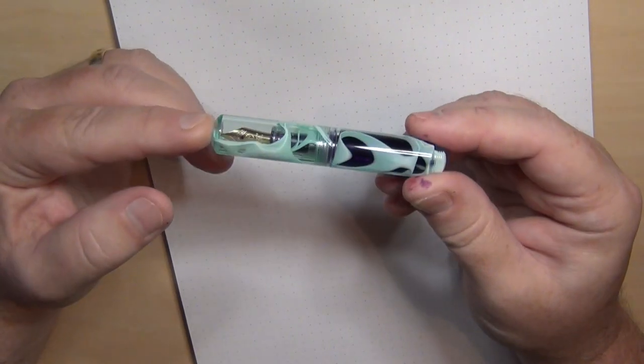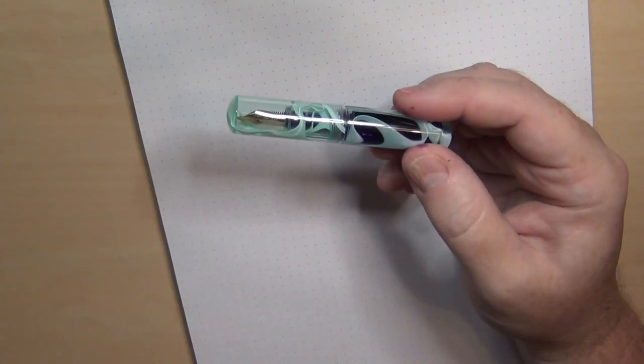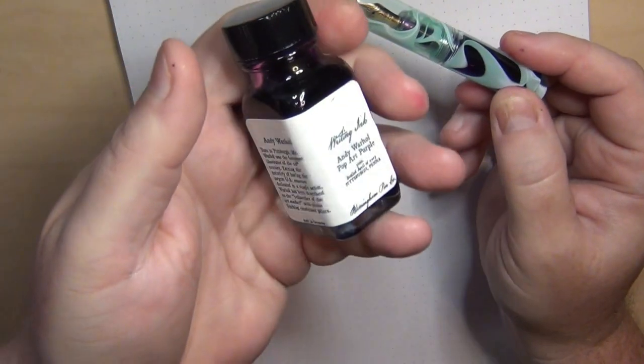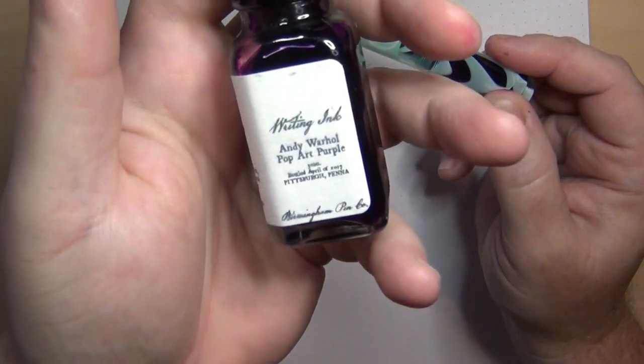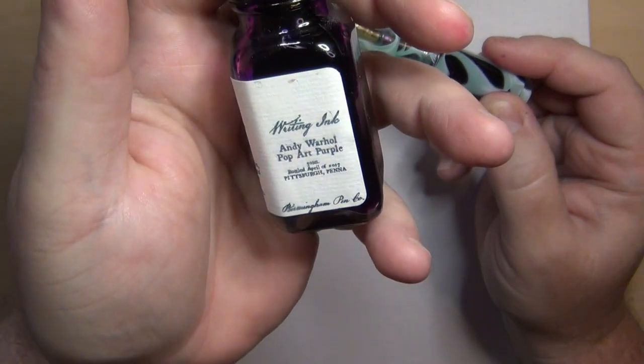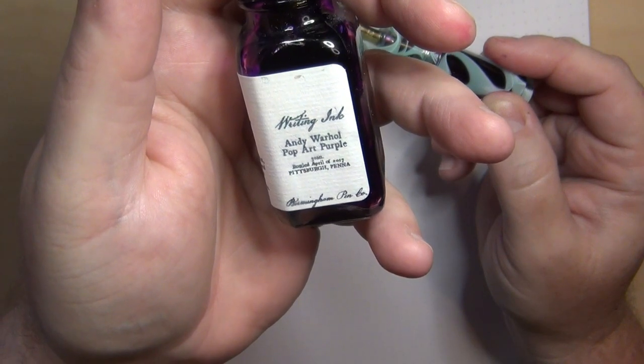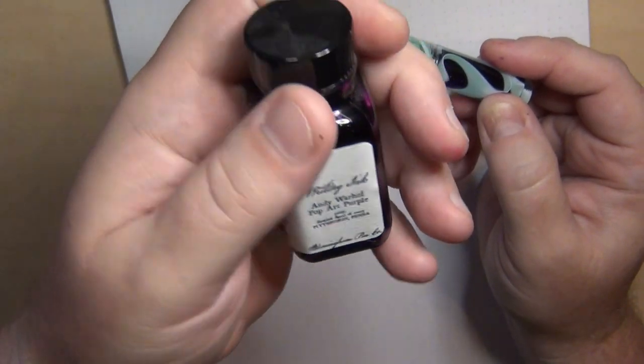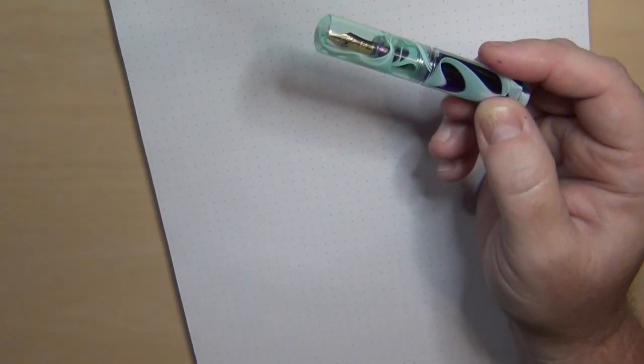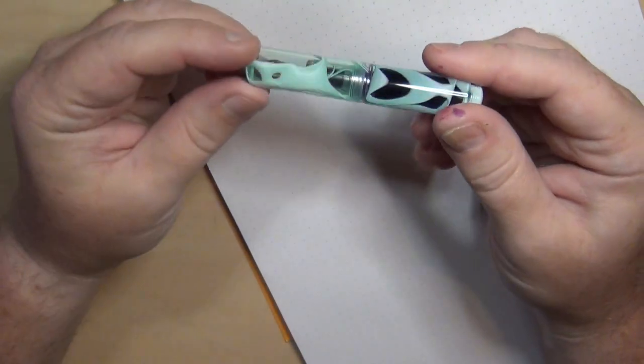So rather than totally give up on the pen, I decided to flush it out and use some Birmingham pens and put in ink that I know behaved well. I put in some Andy Warhol Pop Art Purple, because I don't have that in any other pen right now, and I wanted something that was kind of unique and pretty.